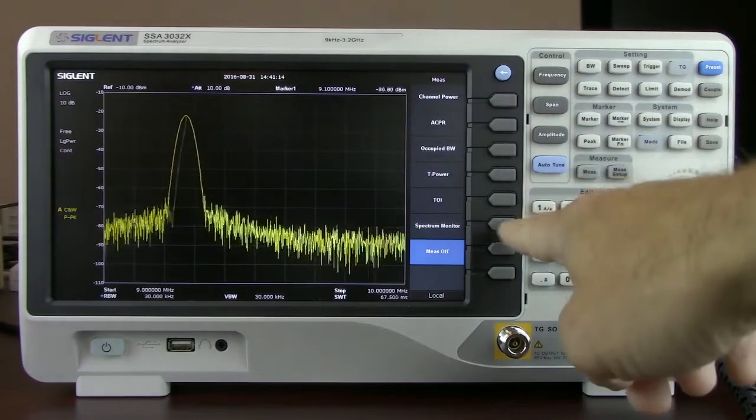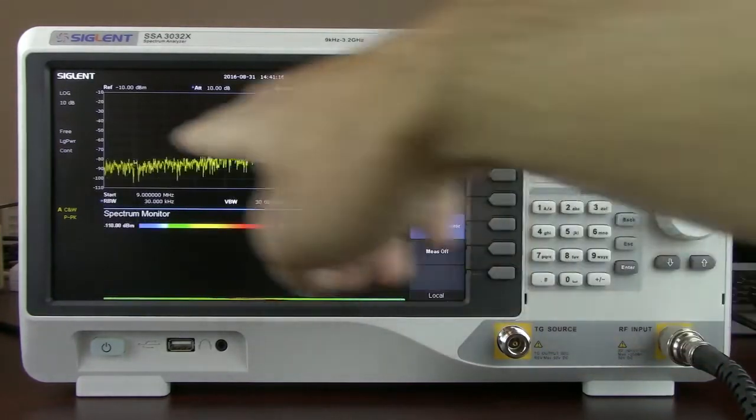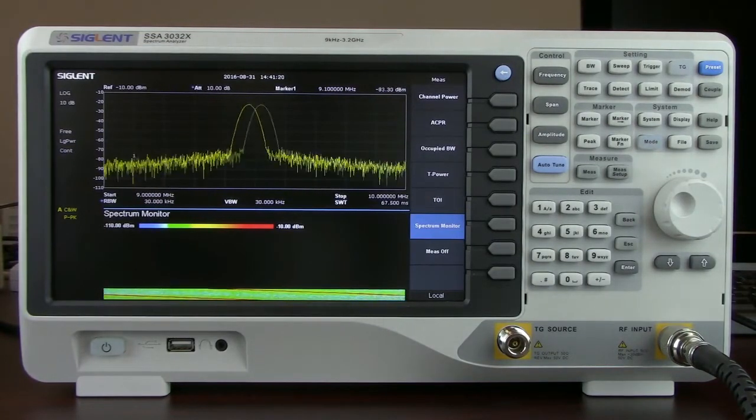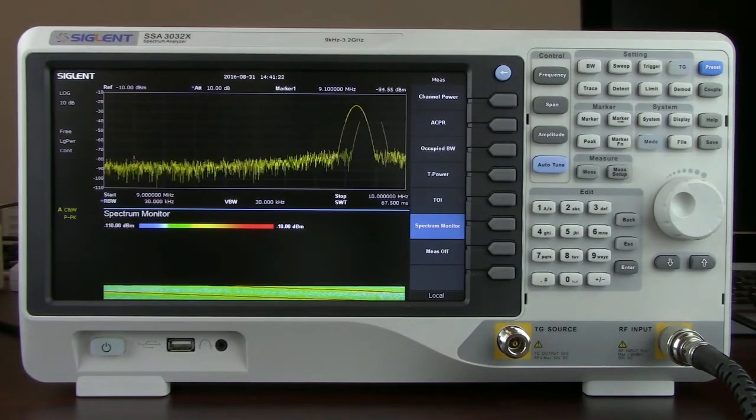By pressing the spectrum monitor, we'll see now we have a sweeping trace. The frequency is sweeping from a start frequency to a stop frequency. And then over time with each successive pass, we're actually seeing the waterfall chart located here on the bottom from minus 10 dBm in red to minus 110 dBm in blue.